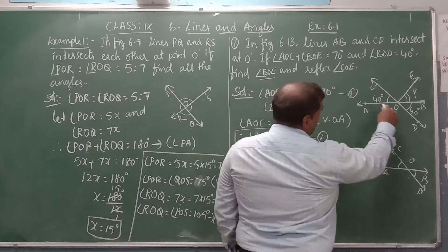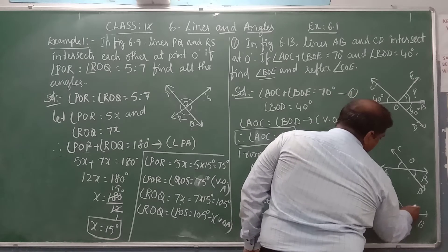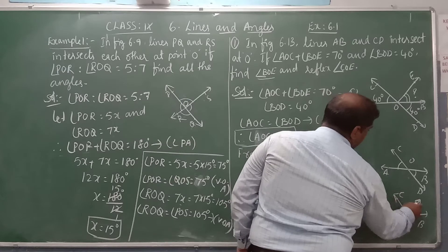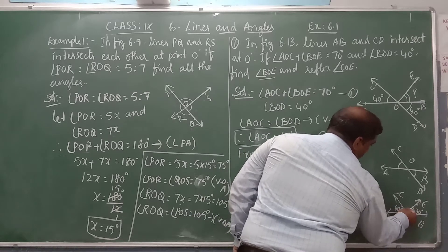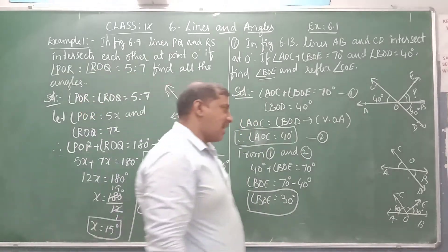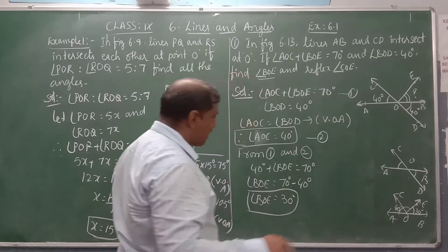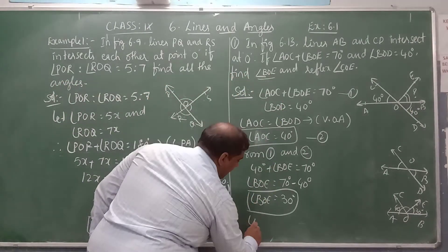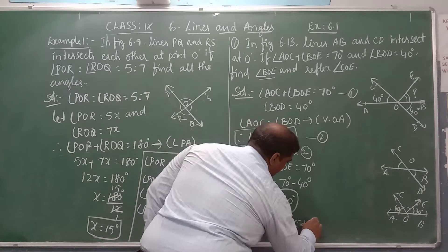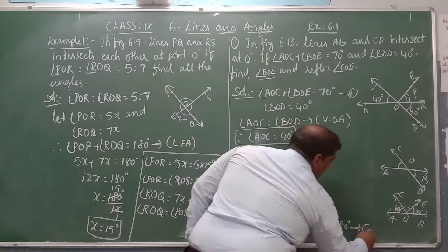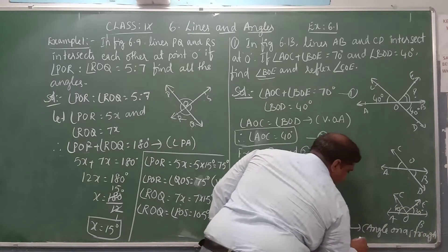On the straight line we have angle AOC, angle COE, and angle BOE. The sum of these three angles equals 180 degrees — the total angle on a straight line is 180 degrees. So angle AOC plus angle COE plus angle BOE equals 180 degrees.